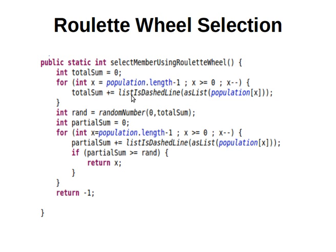My fitness function here is named listIsDashedLine because, as I explained in the previous videos, we are solving a dashed line problem where we have several small line segments, and we're trying to find the order of those segments so they can make a larger dashed line. Please watch the previous videos to get the full context. But this can be your own fitness function.